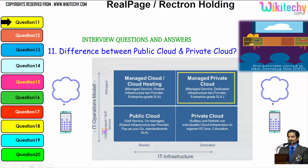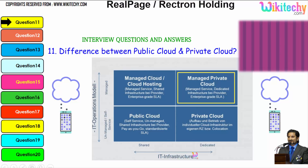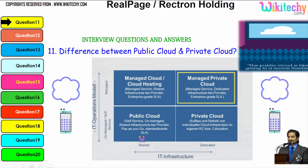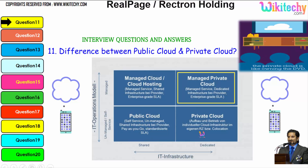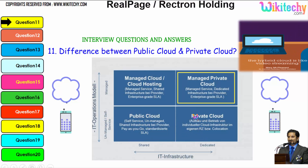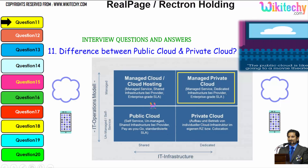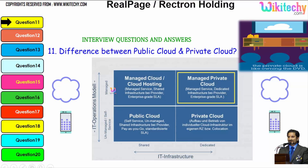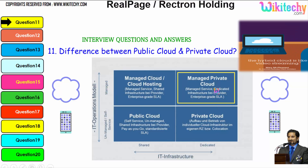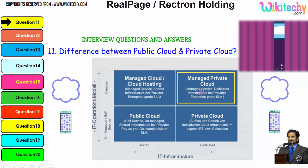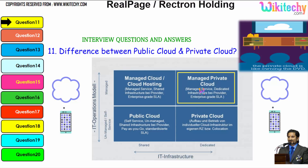Here I have put the IT operations model and the IT infrastructure. Public cloud provides shared and unmanaged services. A dedicated unmanaged service is given by the private cloud. A managed cloud hosting is given by the shared managed cloud. A managed dedicated service is given by the managed private cloud. This is how you can see the differences between the public cloud and the private cloud.